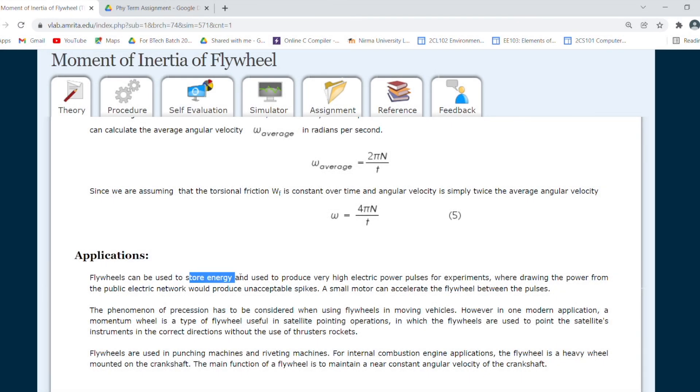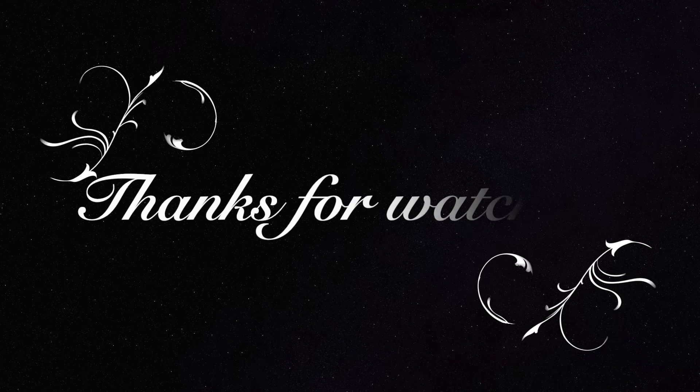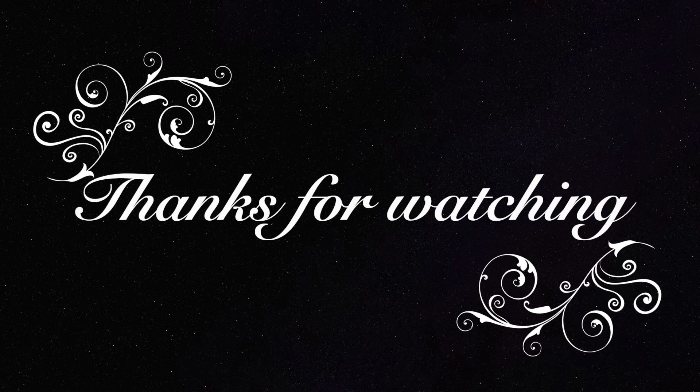Applications of flywheel: Flywheels are used to store energy and produce very high electric power pulses for experiments. A small motor can accelerate the flywheel between pulses. The phenomenon of precession has to be considered while using flywheels in moving vehicles. One modern application is to point satellites in the correct direction without using thrusters. Flywheels are also used in punching machines and riveting machines. For internal combustion engines, a flywheel is a heavy wheel mounted on the crankshaft. The main function is to maintain near constant angular velocity of the crankshaft. Hope you understand the experiment and will be able to perform it by yourself. Thanks for watching the video.